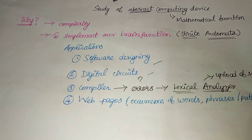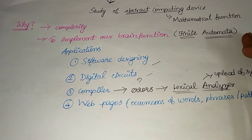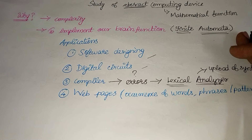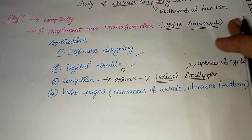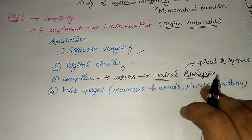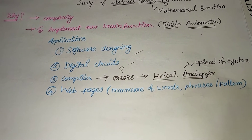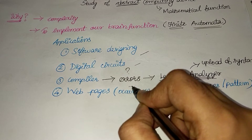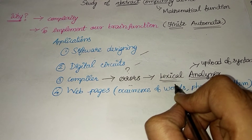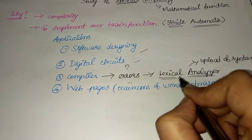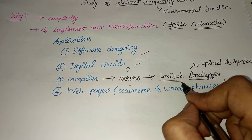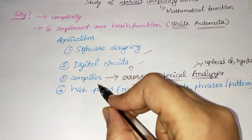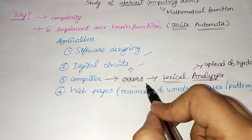In the next video, we have a compiler example. You will know how to use a compiler. Once we take a program, we compile it to run. With errors, we will compile it. This is the lexical analyzer. For example, if we do Python programming, we will run it and use this lexical analyzer. If we type our program, it automatically checks the compiler's syntax. This is one use of Finite Automata.